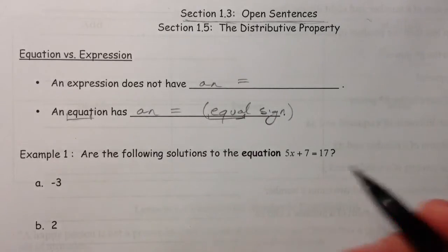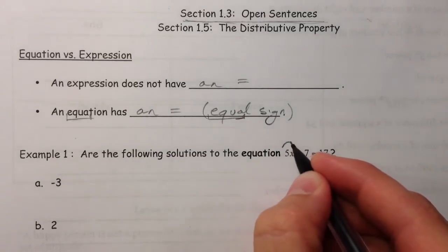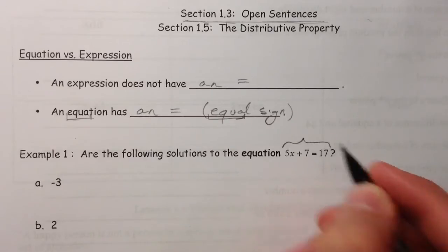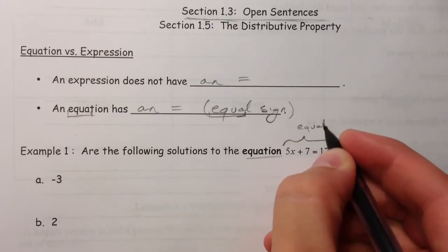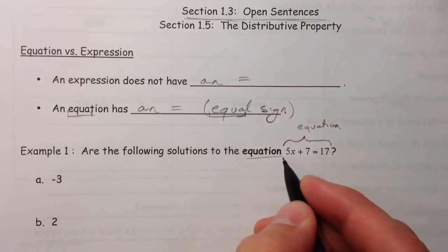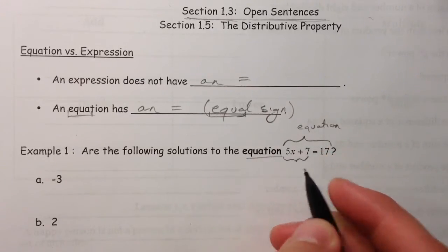So for example, and why do we need to know it, this whole thing right here that we're going to use in a second is called an equation. And part of it, just the left-hand side, could be called an expression.